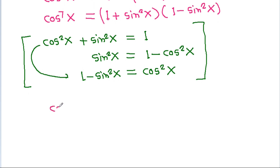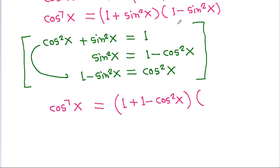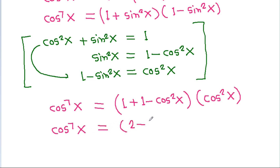So, cos⁷x equals (1 plus sin²x) times (1 minus sin²x), which becomes (1 plus (1 minus cos²x)) times cos²x, giving cos⁷x equals (2 minus cos²x) times cos²x.